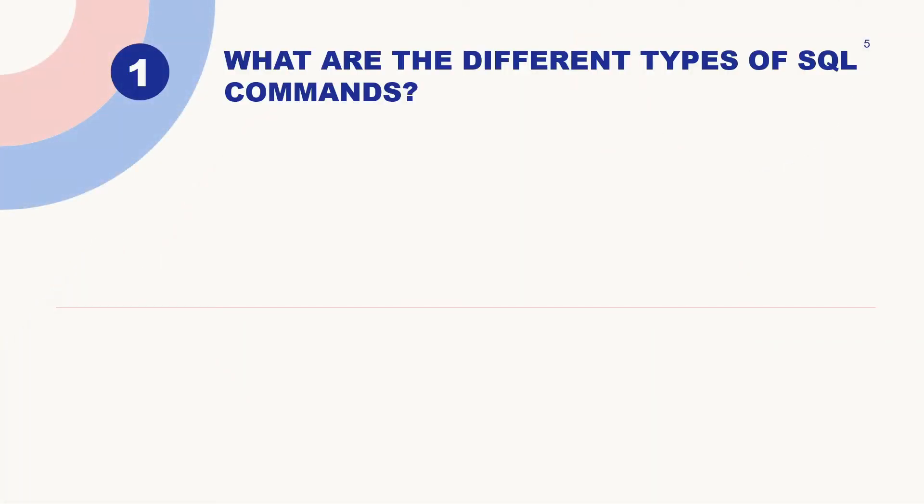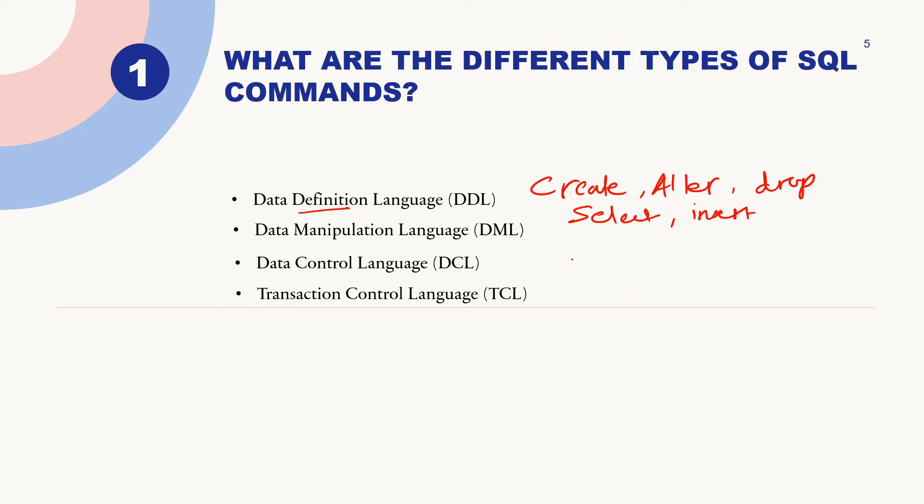Let's start with the first question: what are the different types of SQL commands? In SQL, we have four types of commands. First is Data Definition Language commands like CREATE, ALTER, or DROP. Next we have Data Manipulation Language which includes SELECT and INSERT statements. Then we have Data Control Language like GRANT or REVOKE, and last we have Transaction Control Language which is COMMIT or ROLLBACK.